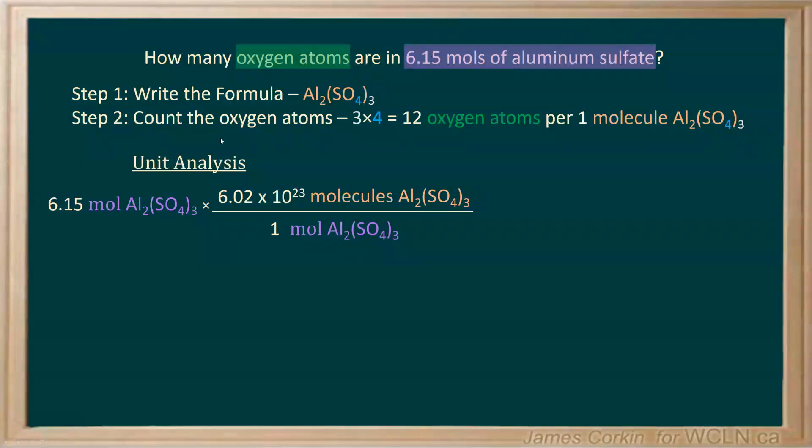Then to go from molecules to atoms, we use the information we just explained. Make sure you cancel your units. Here we are. We have 12 oxygen atoms for every one molecule of aluminum sulfate. So there's our setup.